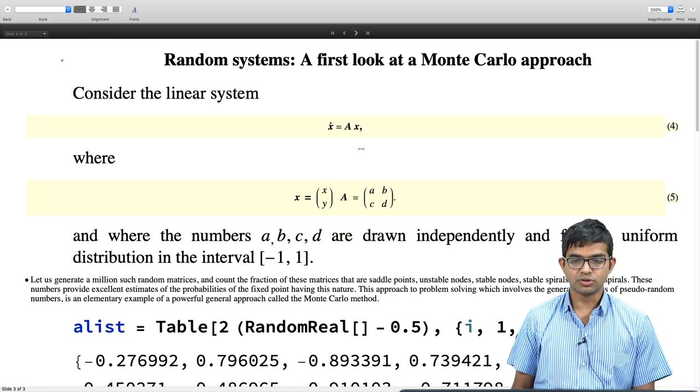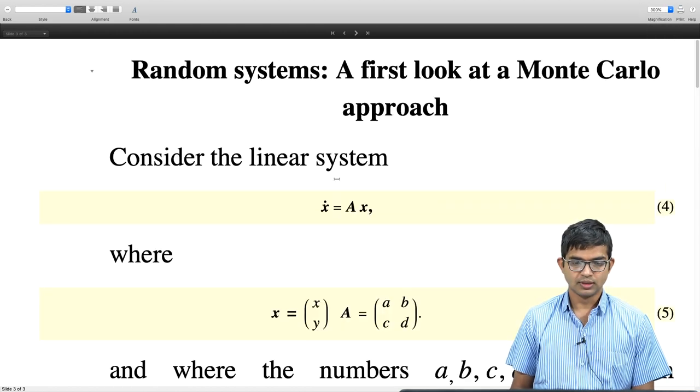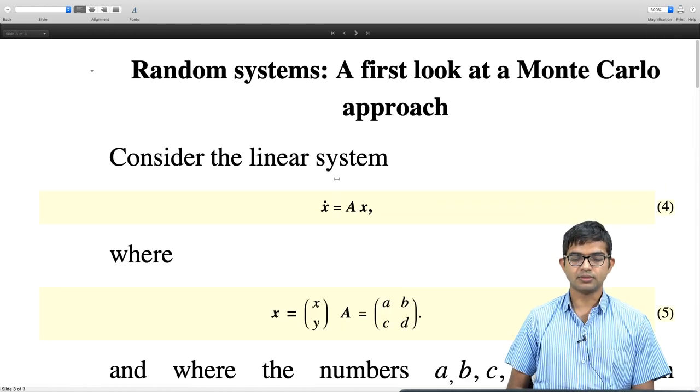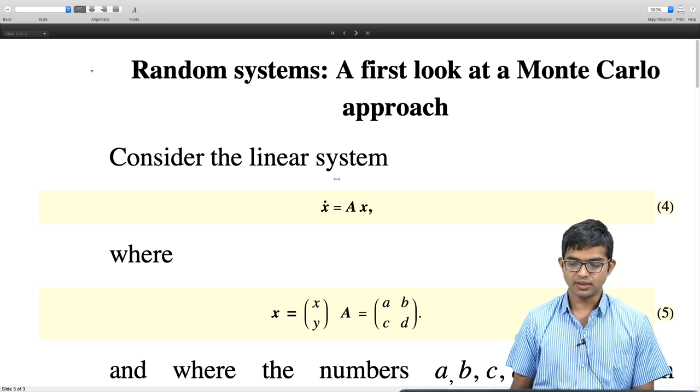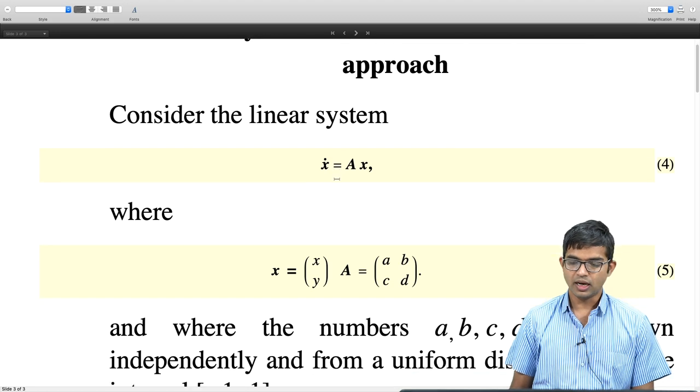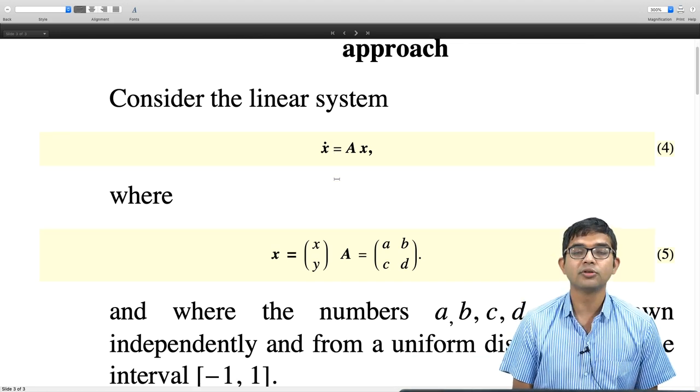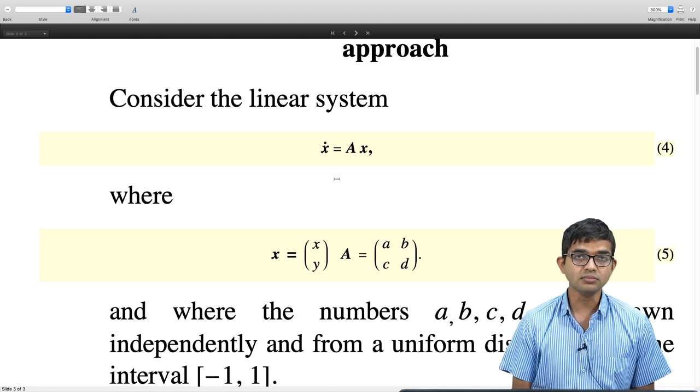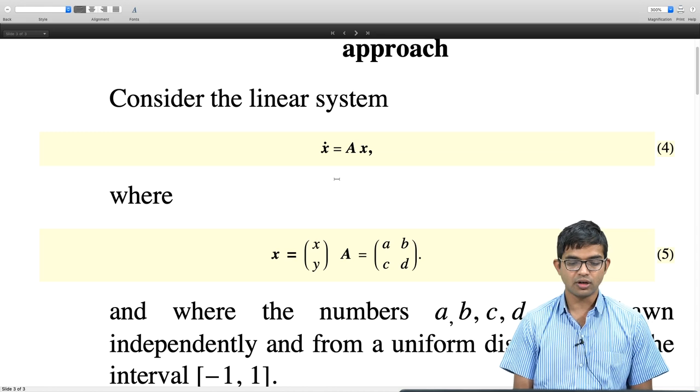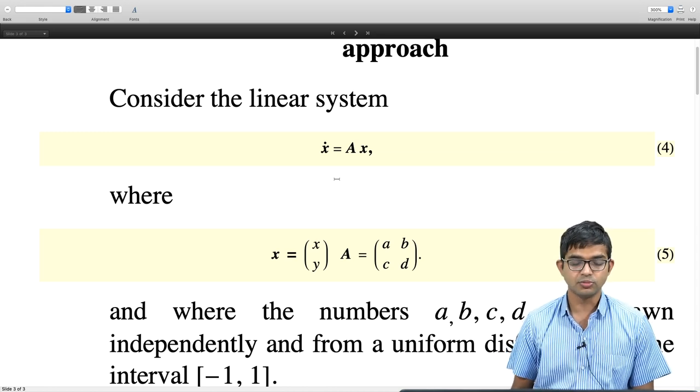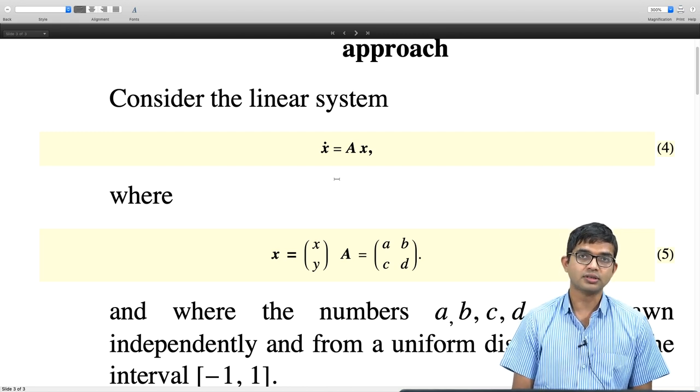Now what I want to do is pose this problem. Consider this linear system where you have this vector x, y and your matrix A equal to A, B, C, D and where I do not know what these numbers A, B, C, D are. I am just telling you that these numbers are real and they are drawn independently from a uniform distribution in the interval minus 1 to 1.